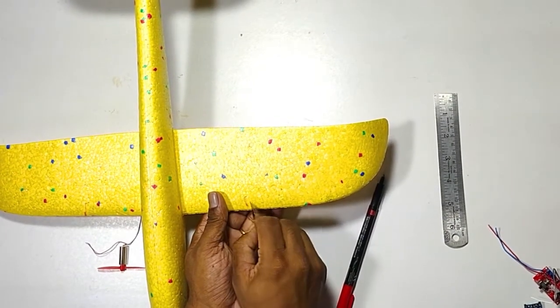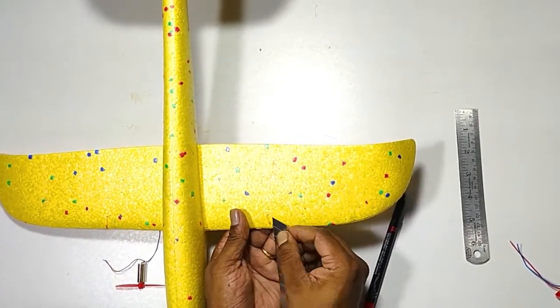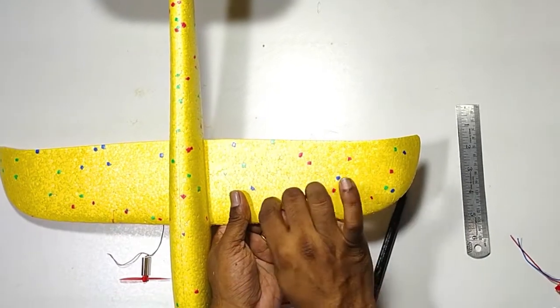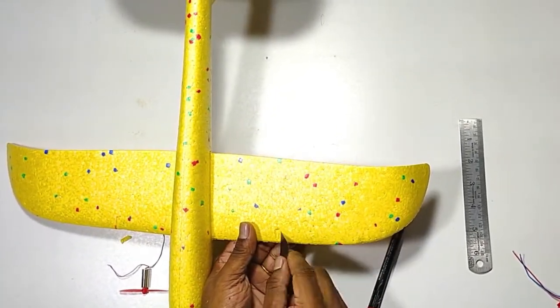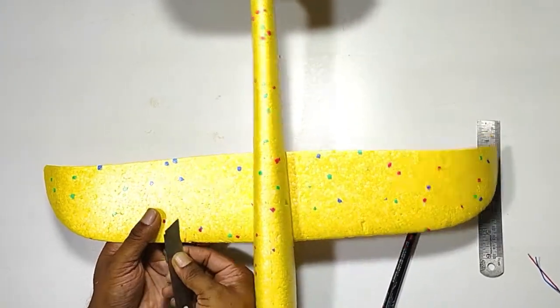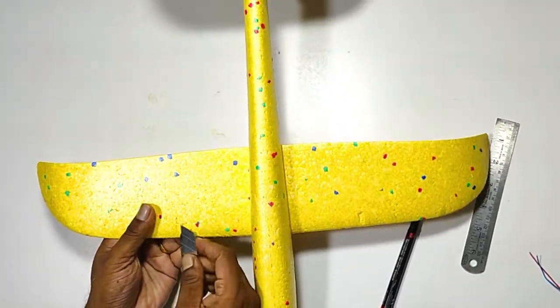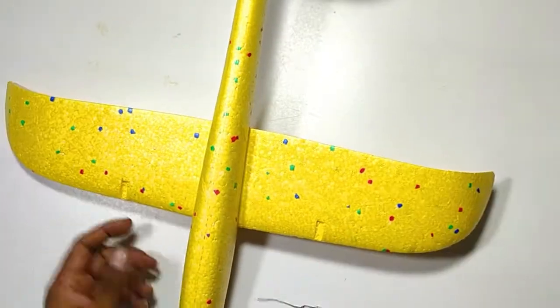So we need to cut small slot on the wing for fitting the motor. We are using knife. But be careful while using knives. Safety is more important. So please do it carefully.